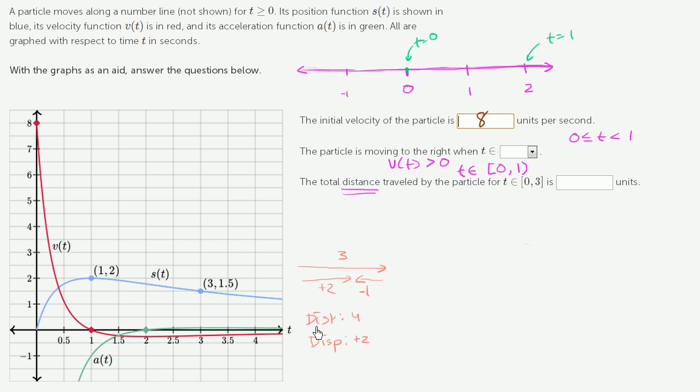So they're asking, what's the total distance traveled? So between time 0 and time 1, we have moved 2 to the right. And then between time 1 and time 3, we move back, or to the left, we move half. So what's our total distance? It's going to be 2 to the right plus half to the left, which is going to be 2.5 units.